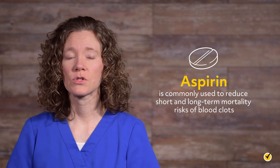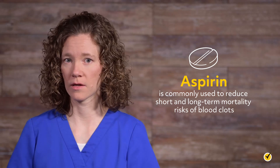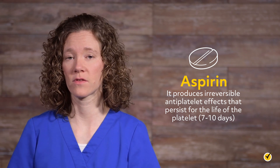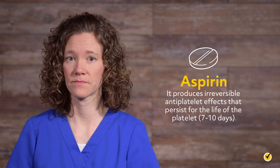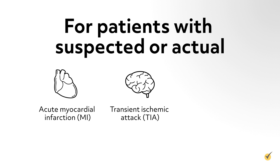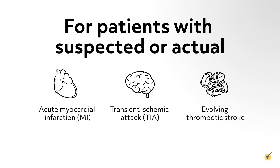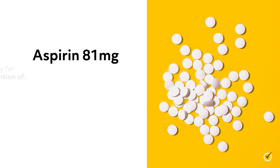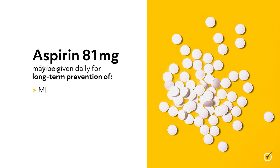Aspirin is commonly used to reduce short- and long-term mortality risks of blood clots. It produces irreversible antiplatelet effects that persist for the life of the platelet. For patients with a suspected or actual acute myocardial infarction, transient ischemic attack, or evolving thrombotic stroke, an oral dose of 160–325 mg is given initially, preferably chewed for better absorption. Aspirin 81 mg may be given daily for long-term prevention of MI, stroke, or for a patient with prosthetic heart valves.